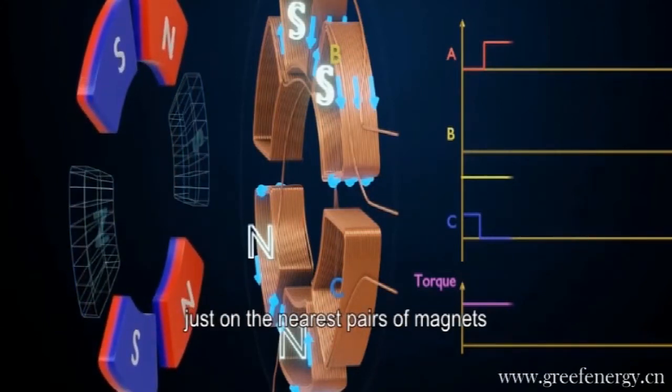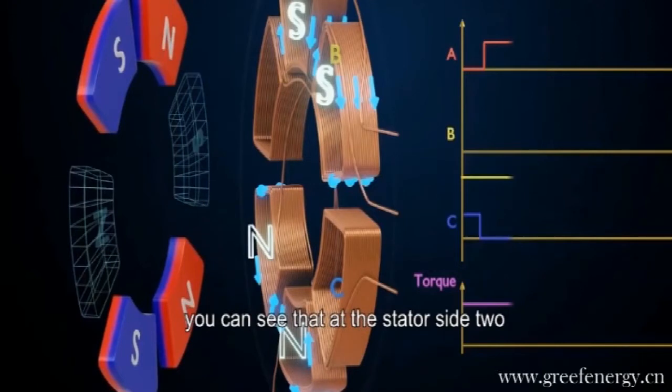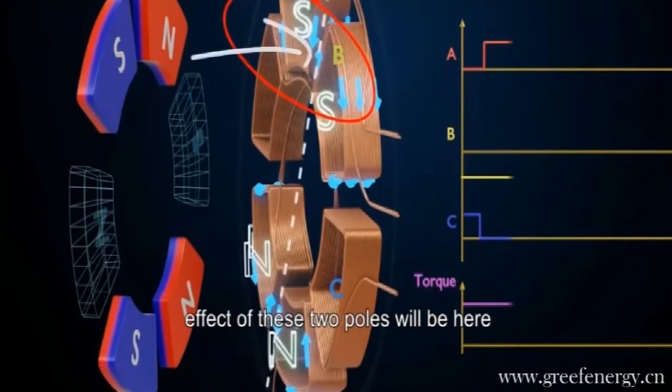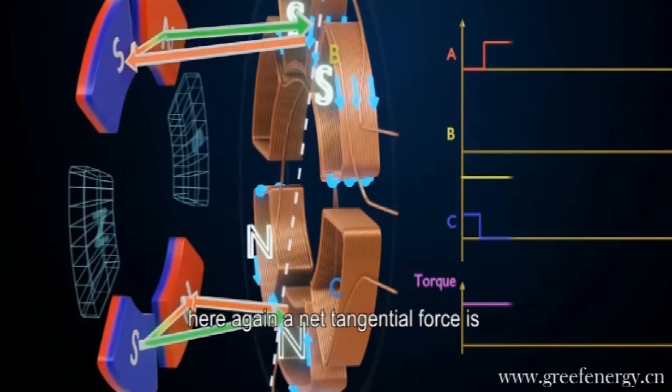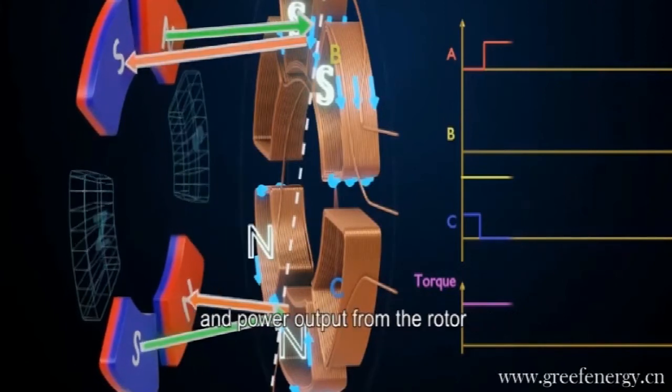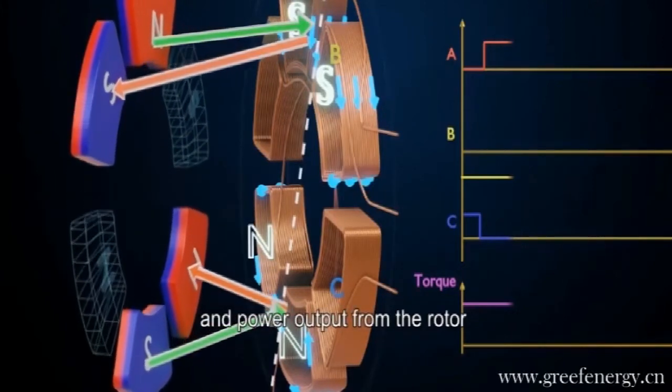To ease the understanding, let's focus just on the nearest pairs of magnets. You can see that at the stator side, two south poles are together. The combined effect of these two poles will be here, and based on this, we can have an easy force analysis. Here again, a net tangential force is developed. The combined effect produces more torque and power output from the rotor.